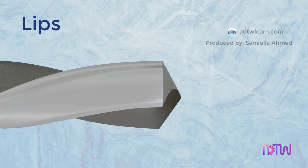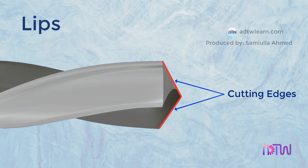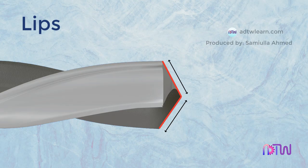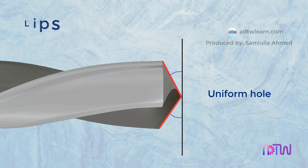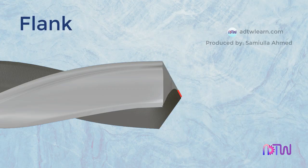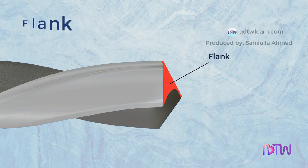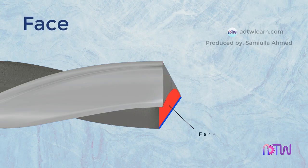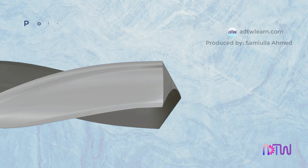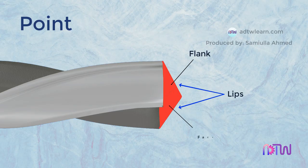Lips: looking closely at the tip of the body, we can see the cutting edges, known as lips. Both lips should have the same length and the same angle of inclination to produce a uniform hole. Flank: the surface that connects the cutting lip to its respected flute is called the flank. Face: the portion of the flute surface adjacent to the lip is called the face. Point: the point is the conical shape of the drill consisting of lips, flank, and face.